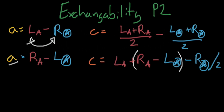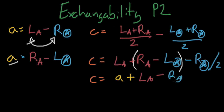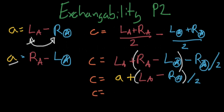So let's factor this in. Causation equals — the middle part is association, so I'll pull that out — equals association plus L sub A minus R sub A, all over two. The left-hand side minus the right-hand side was our original definition of association above; we didn't even need exchangeability to write that in. So we substitute it in: causation equals association plus association divided by two, which equals association.